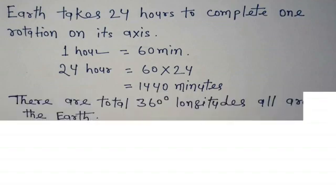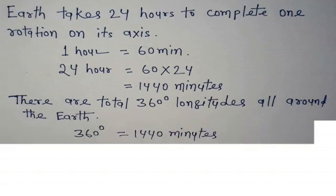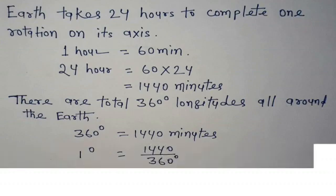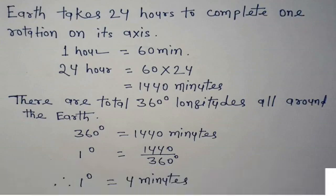You all know that there are a total of 360 longitudes all around the Earth. Each degree represents one longitude. So 360 degrees equals 1440 minutes. One degree of longitude equals 1440 divided by 360, which gives us four minutes per degree.